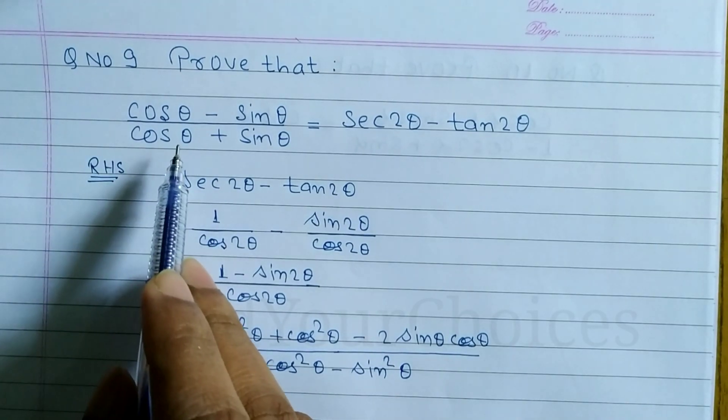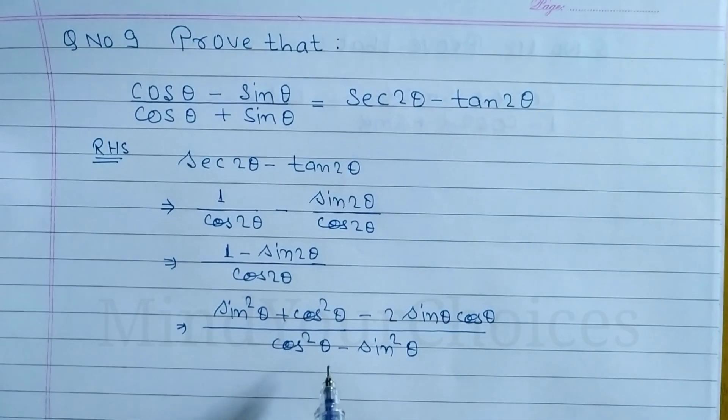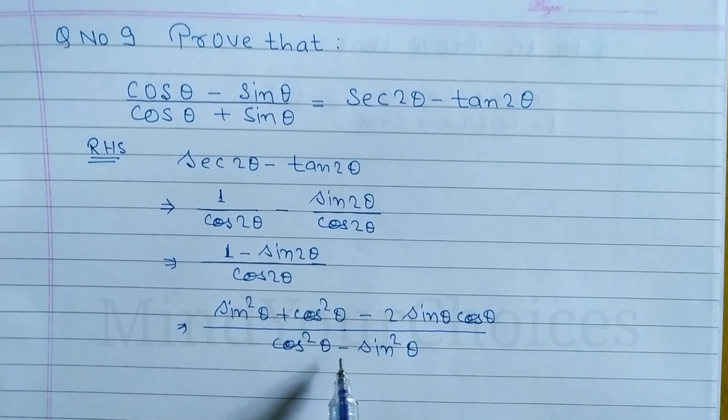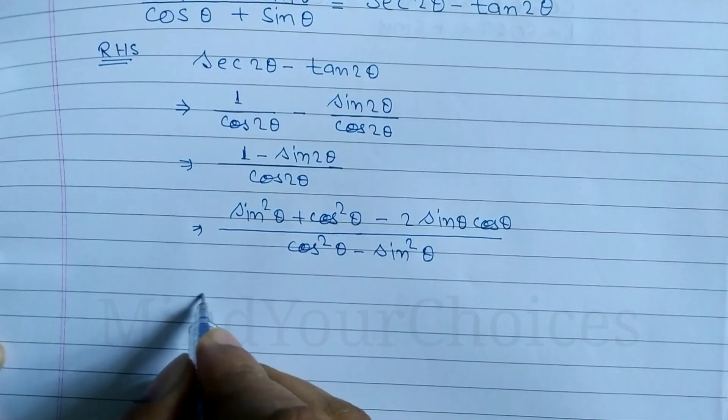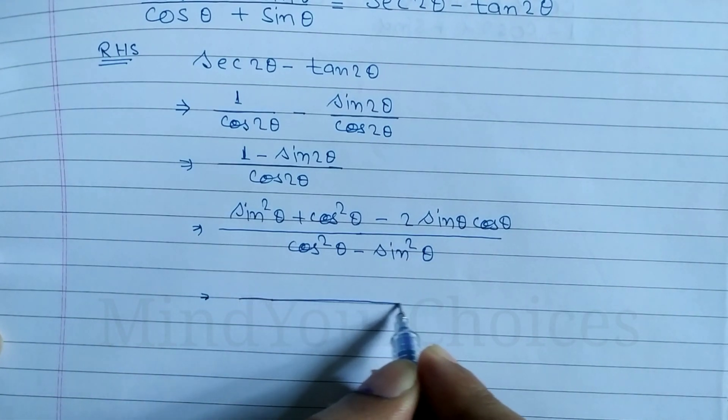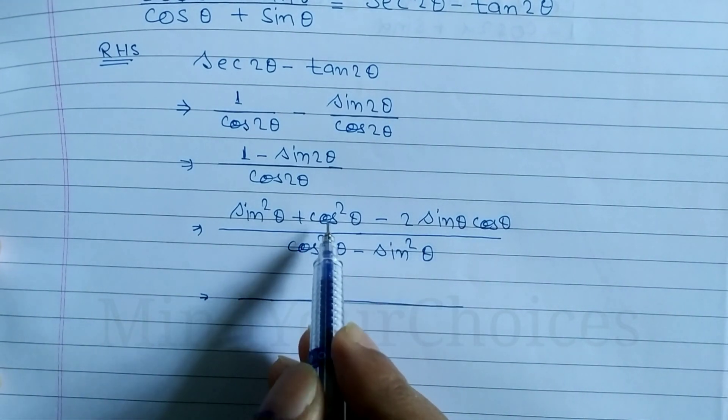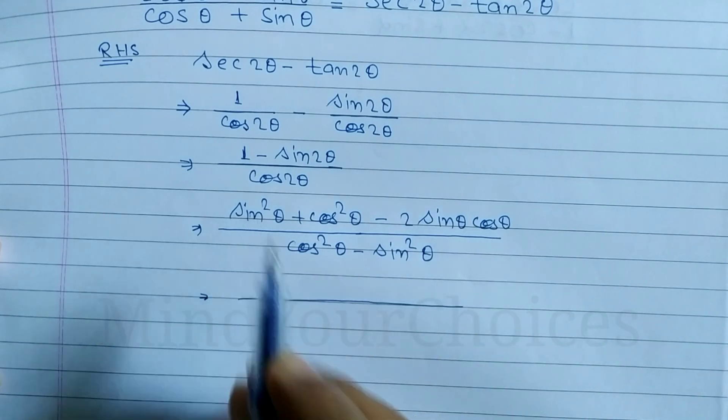We can convert this using a square plus b square form. In the numerator, we have the form of a square minus 2ab plus b square.